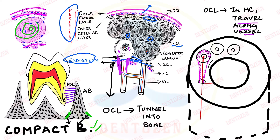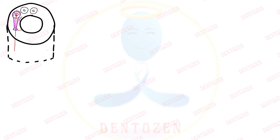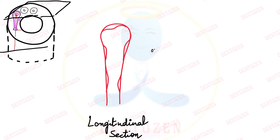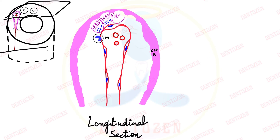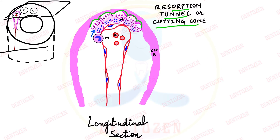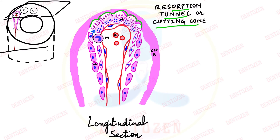In both longitudinal and cross sections, we can see the central medullary cavity surrounded by compact bone with osteones. Monocyte precursors migrate out of blood vessels and form multinucleated osteoclasts on the bone surface. These osteoclasts create a circular resorption front — called the cutting cone or resorption tunnel — as the leading edge. Following them are pre-osteoblast cells, which convert into osteoblasts.